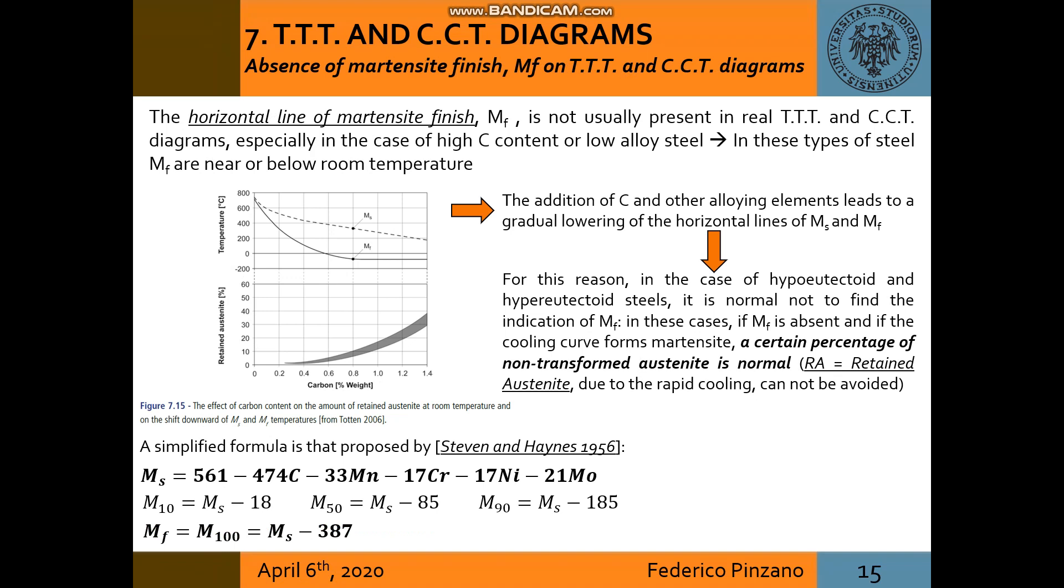Finally, the addition of carbon and other alloying elements leads to a gradual lowering of the horizontal lines of MS and MF. The horizontal line of martensite finish MF is not usually present in real TTT and CCT diagrams because usually it is near or below room temperature. If MS is absent and if the cooling curve forms martensite, a certain percentage of non-transformed austenite is normal and it is called retained austenite. Here are also shown simplified formulas proposed by Steven and Haynes for the calculation of MS and MF.